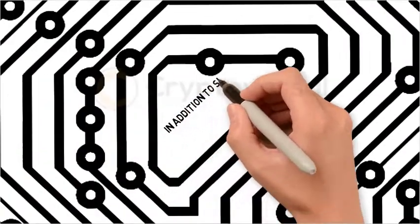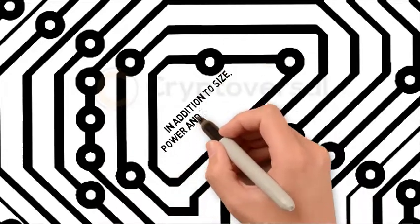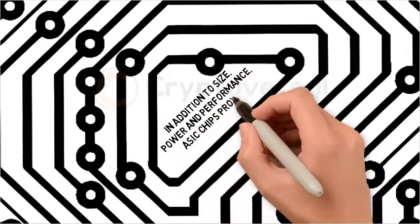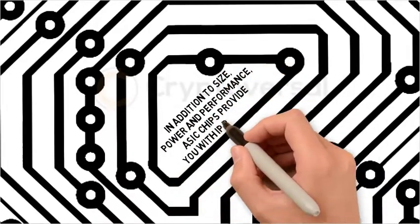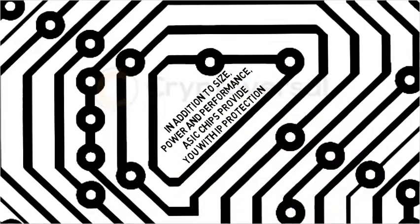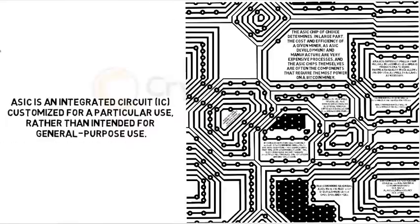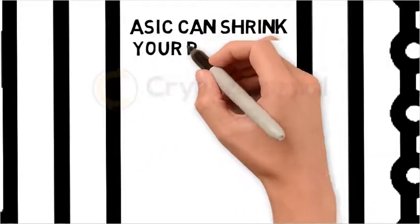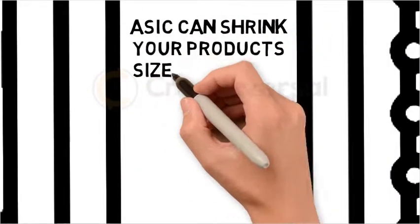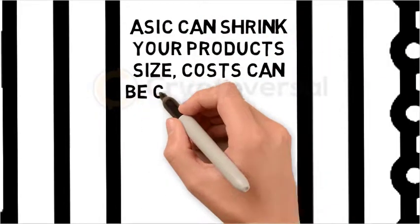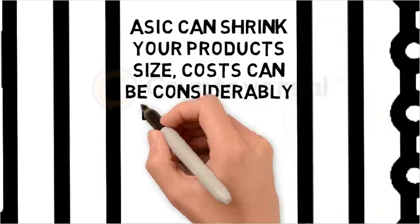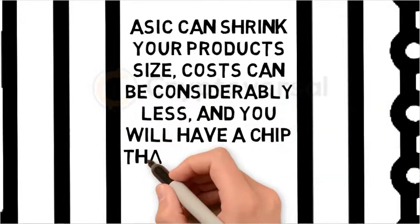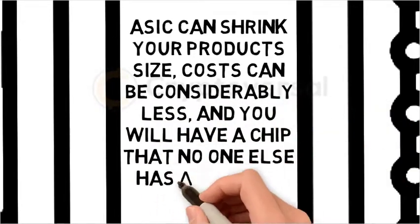In addition to size, power, and performance, ASIC chips provide you with IP protection. ASIC can shrink your product size, costs can be considerably less, and you will have a chip that no one else has access to besides you.